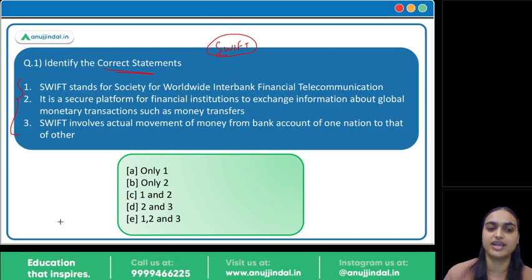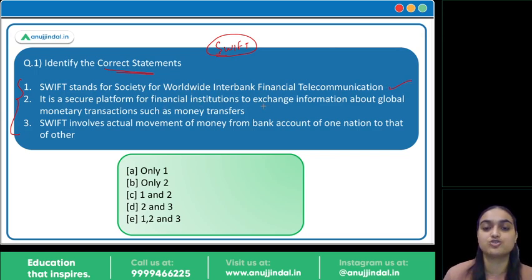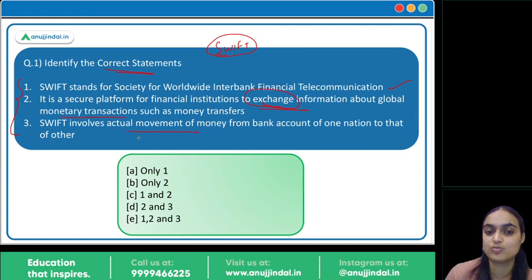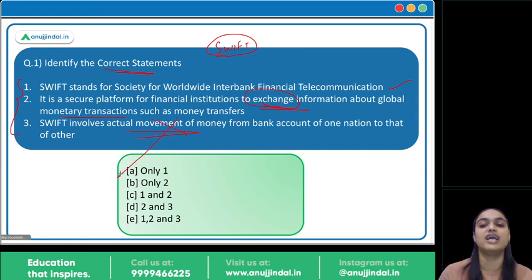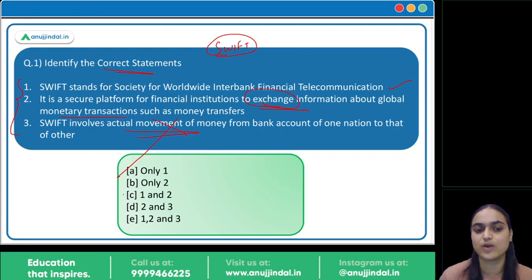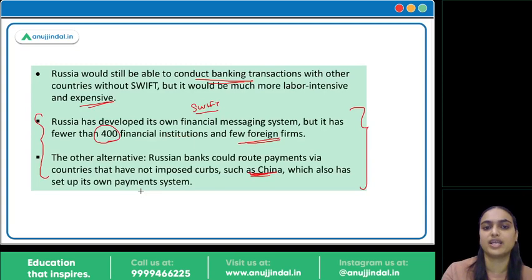Coming back to the question: Statement 1 — SWIFT stands for Society for Worldwide Interbank Financial Telecommunication — is correct. Statement 2 — it's a secure platform for financial institutions to exchange information about global monetary transactions — is also correct. Statement 3 — SWIFT involves actual movement of money — is incorrect; it's only the exchange of information. So the correct statements are the first and second, making the answer option C.